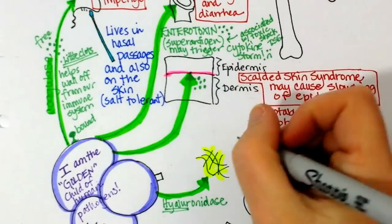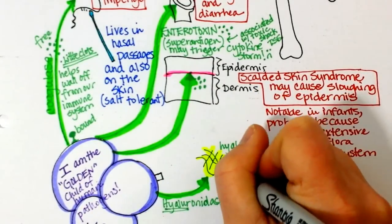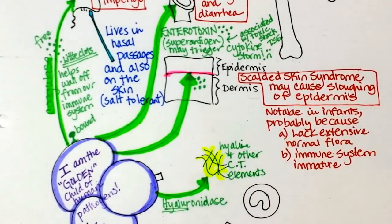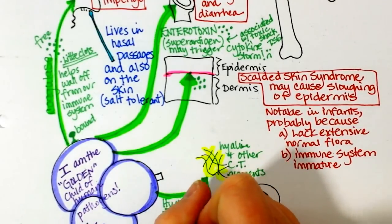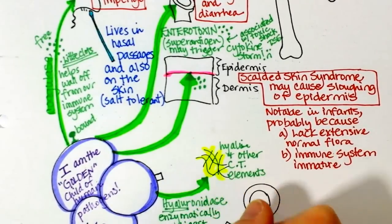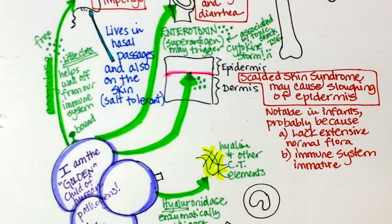So this would be hyaline and other connective tissue. CT is connective tissue elements. So this hyaluronidase is able to enzymatically digest connective tissue. And because of that may be associated with lots of spreading diseases. So to give you examples of that, let's go ahead and draw a green arrow up to the bone. And then up to the heart.